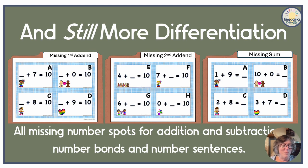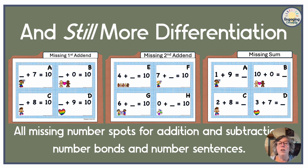There's still more differentiation! All the missing number spots for addition and subtraction — both number bonds and number sentences — are available when you purchase this bundle. On the left we have the missing first addend, the middle is the missing second addend, and the right is the missing sum. And when you purchase the bundle, you're getting addition and subtraction, so you've got all those spots for subtraction questions too.